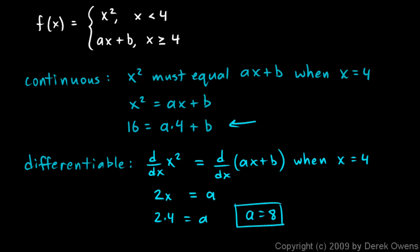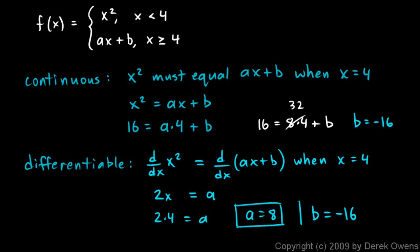Now we can plug a equals 8 back into the continuity equation: 16 equals 8 times 4 plus b, which is 16 equals 32 plus b. So b has to be negative 16. Therefore a equals 8 and b equals negative 16.